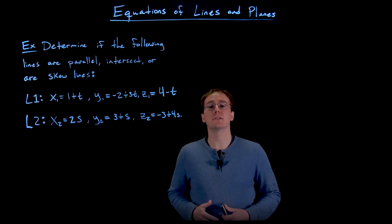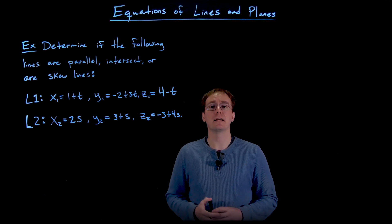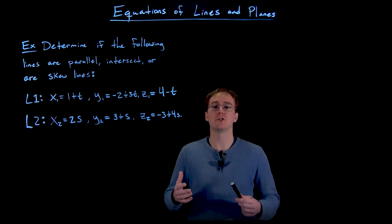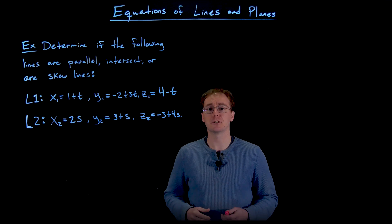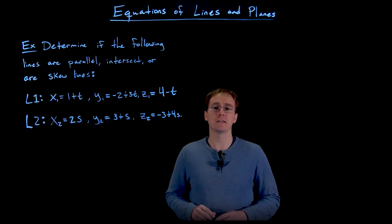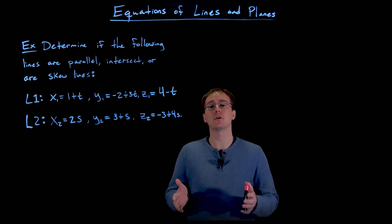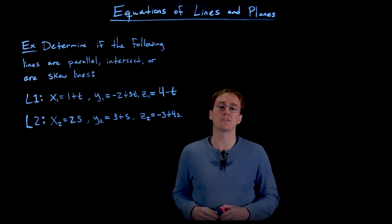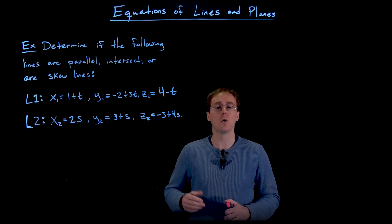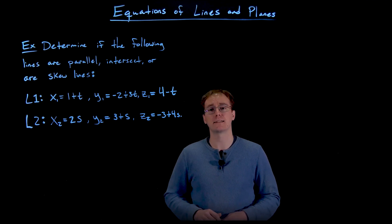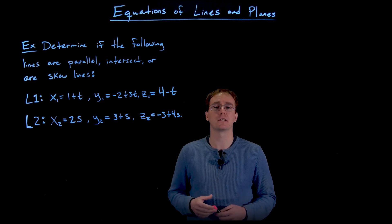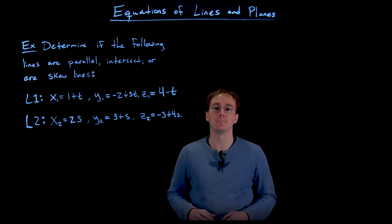Hello everyone. I want to use this example to talk about another difference between our lines in two and three-dimensional space. In two-dimensional space, our lines are either parallel lines or intersecting lines. They can intersect at a single point or at infinitely many points, but that only occurs if they were actually the same line.